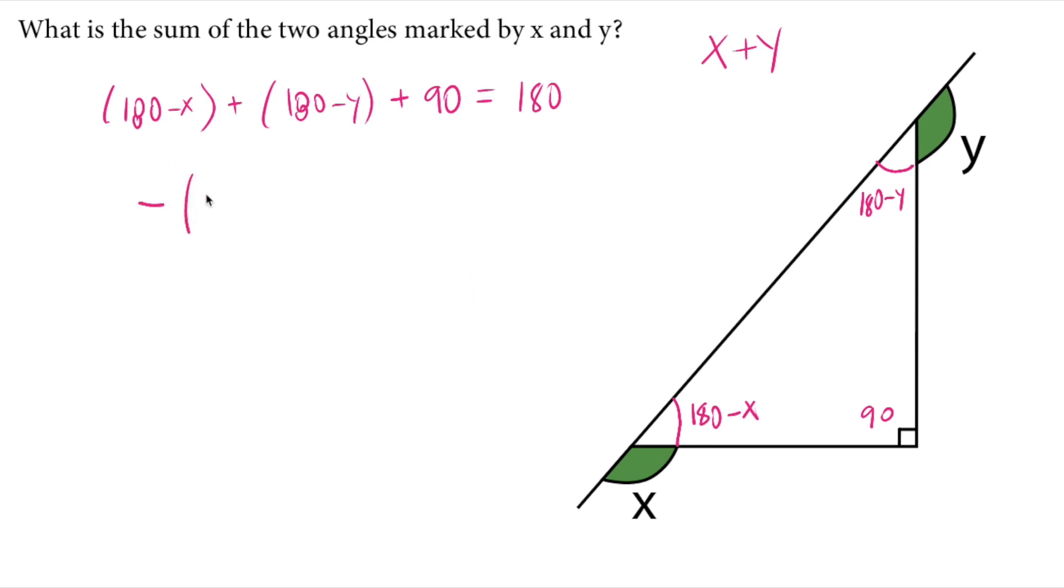In minus parentheses, we have X plus Y, and one of the 180 will cancel, plus 270. It will be equal to zero.